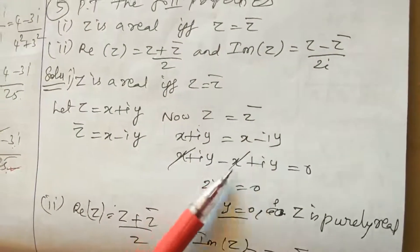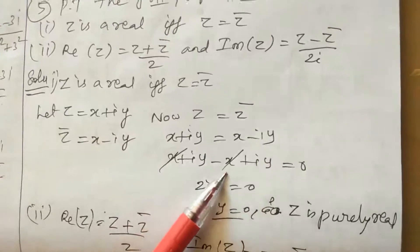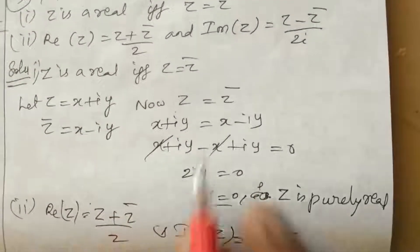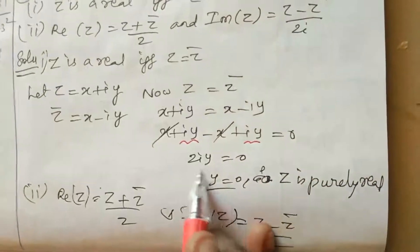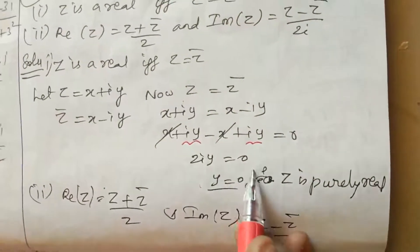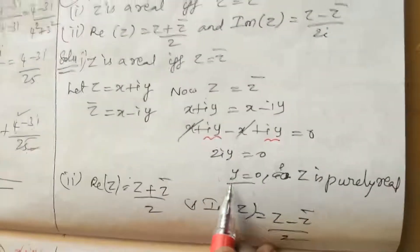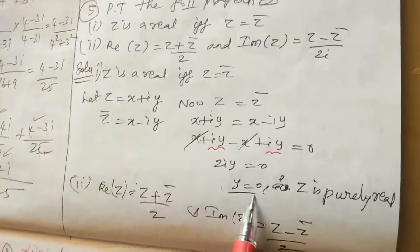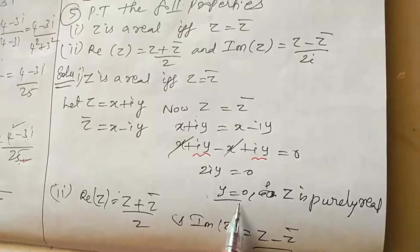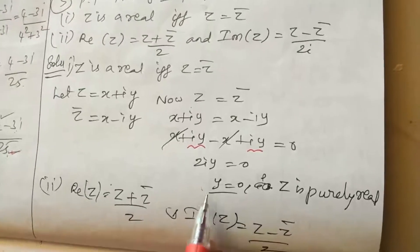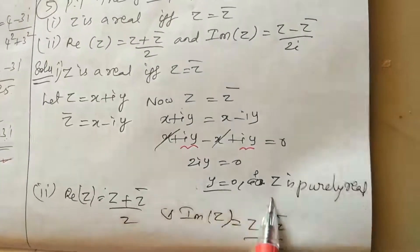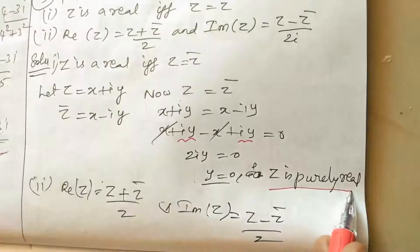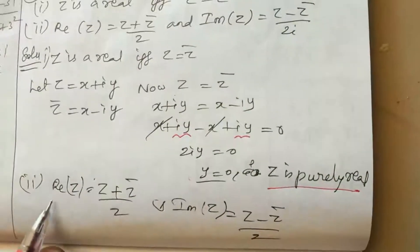For the first property: if Z equals Z bar, then (x plus iy) equals (x minus iy). The x terms cancel, giving 2iy equals 0. Therefore y equals 0, meaning there is no imaginary part, so Z is purely real.